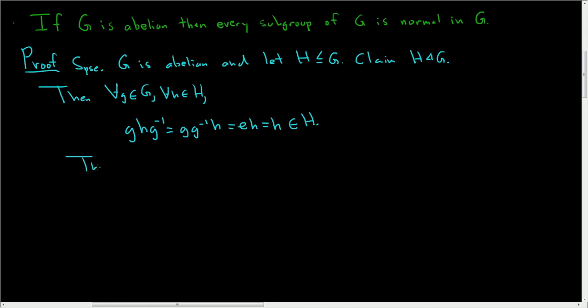And that's it. So this shows that H is a normal subgroup of G. Really, really easy proof.